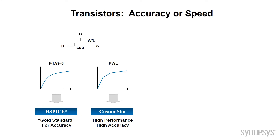Full IV curve models like those used in HSPICE are great for analog and RF designs, but for custom digital designs, you don't need that level of accuracy. You can gain much performance and capacity by using a piecewise linear model. CustomSim from Synopsys is an example of a simulator in this class. These simulators allow you to simulate tens of thousands, maybe a few million, up to 10 million devices using this model.